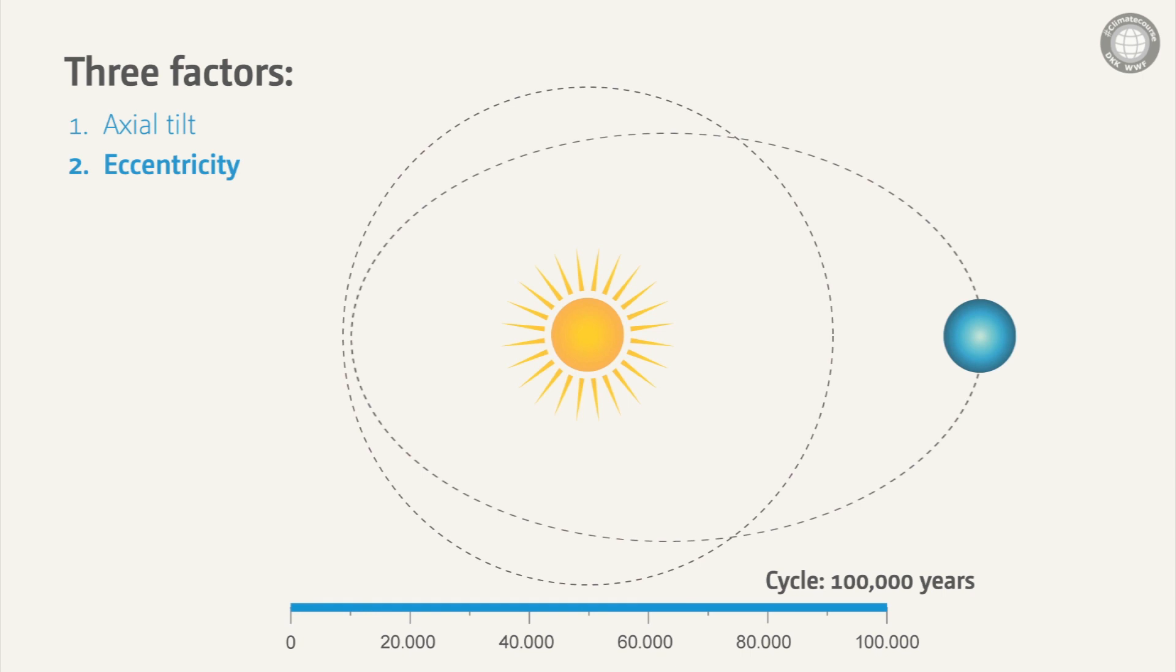In itself, the change in circularity of the orbit has only a very limited effect on the climate. But we will get back to this later.